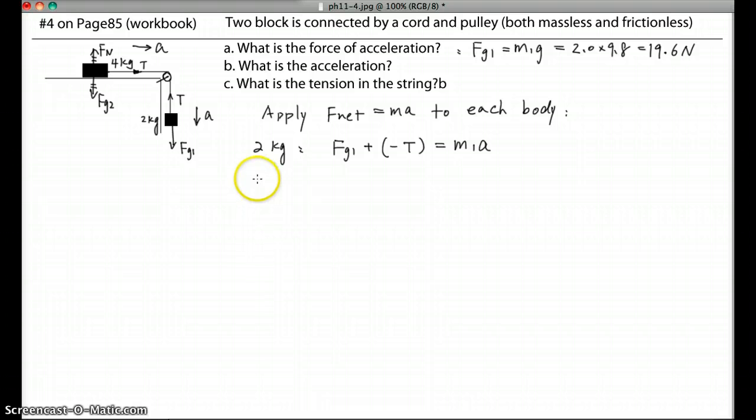For the 4 kg block, vertical direction they're balanced and we don't need to worry about that. We only count the horizontal direction, so we take the right as positive. We should have T, that's the net force, equals MA, so M2A. M1 equals 2 kg, M2 equals 4 kg. The original question is not given the correct significant digits, so we can change to 2.0 and 4.0 so it's easier to figure out the significant digits.